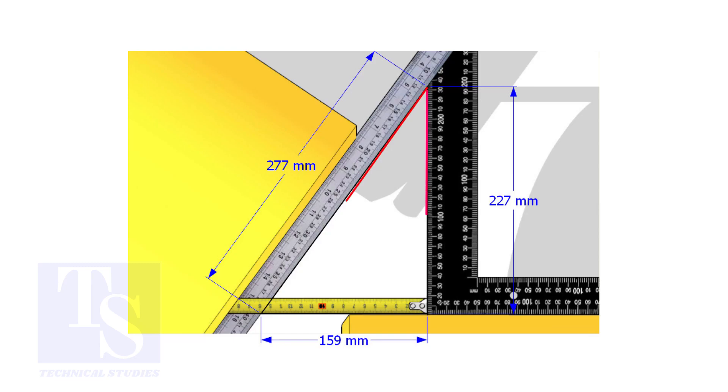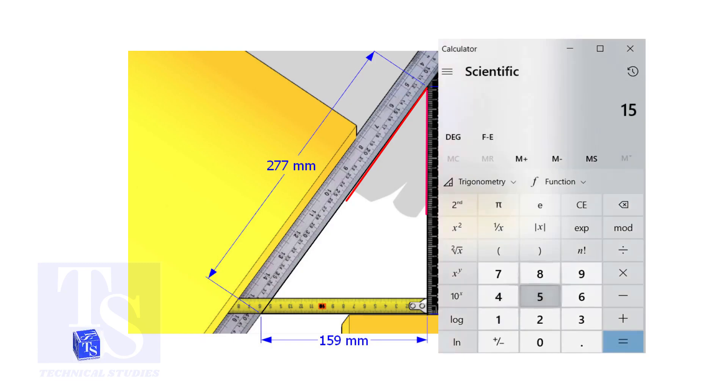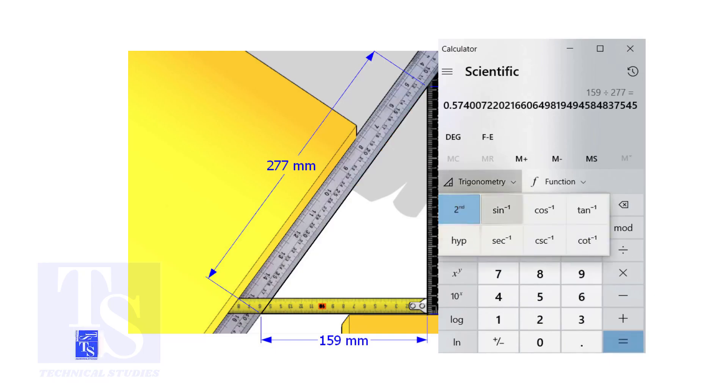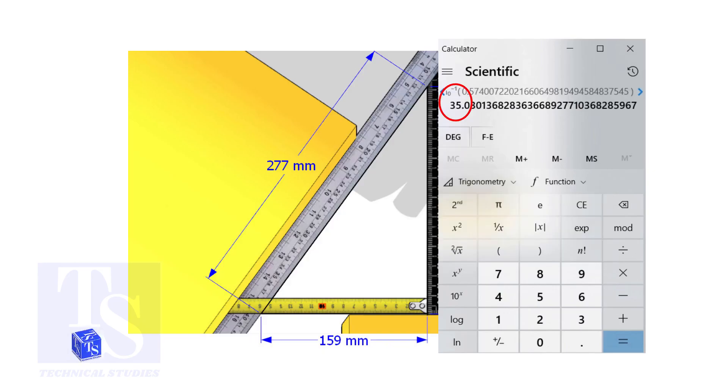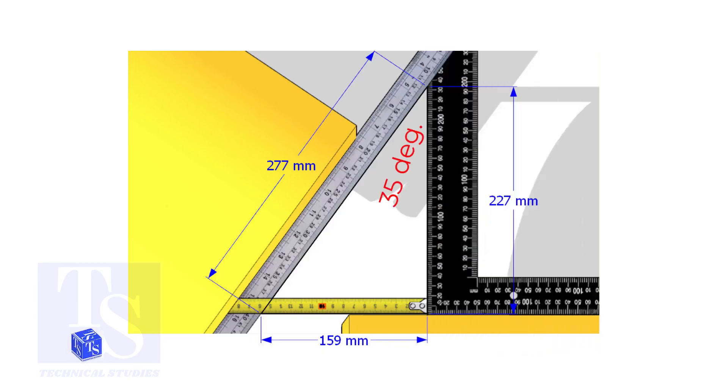If you apply the sine rule, the angle will be 159 divided by 277 shift sine. So the answer is 35 degrees.